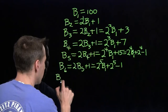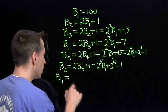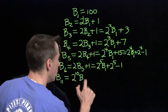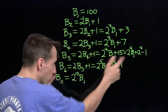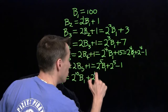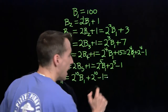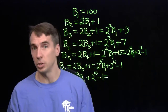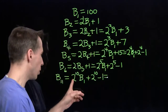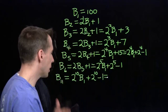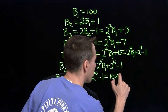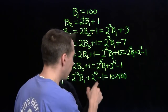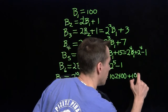Now we can write an expression for b-eleven by continuing the pattern. b-six has two-to-the-fifth times b-one, so b-eleven will have two-to-the-tenth times b-one, plus two-to-the-tenth minus one. Now just some arithmetic: two-to-the-tenth equals two-to-the-fifth times two-to-the-fifth, which is 32 times 32, which is 1024. b-one collected 100 grains, so 1024 times 100 gives 102,400. Then two-to-the-tenth minus one is 1023.